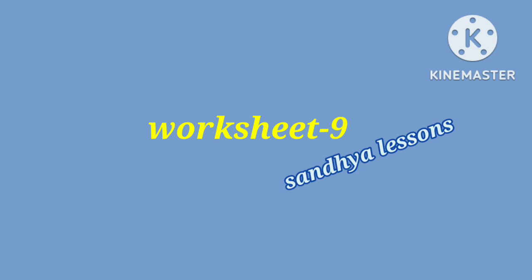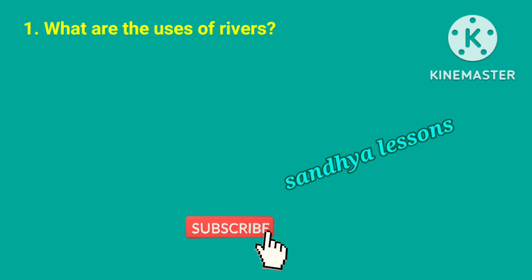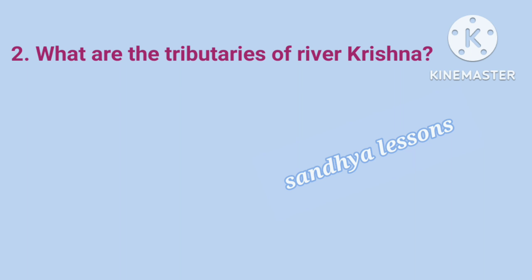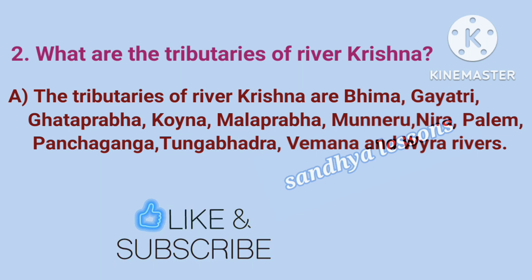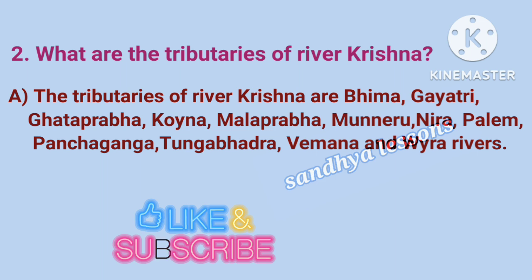Worksheet 9: Improve your learning. First question: What are the uses of rivers? River water is used for agriculture. We can generate electricity with river water. Rivers provide transportation. Rivers provide livelihood to fishermen. Second question: What are the tributaries of river Krishna? The tributaries of river Krishna are Bheema, Gayatri, Gataprabha, Koina, Malaprabha, Munneru, Neera, Palem, Panchaganga, Tungabhadra, Vemana, and Vaira rivers.